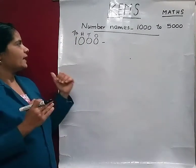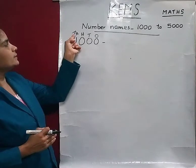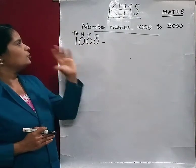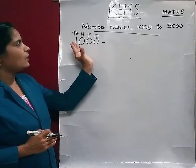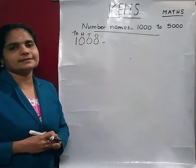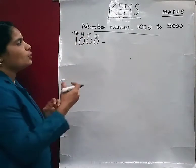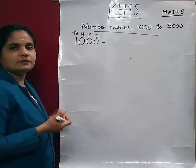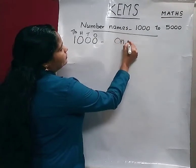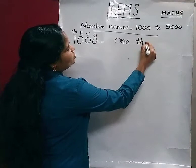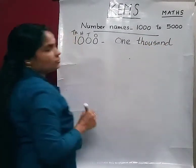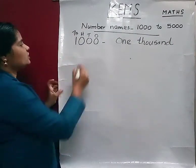So we can read this number. The thousands place has 1, and the remaining places have zeros. So we count this number as one thousand. How to write the spelling? One thousand — T-H-O-U-S-A-N-D. Thousand.